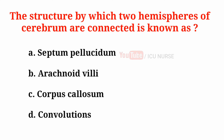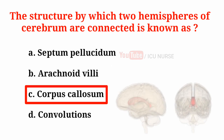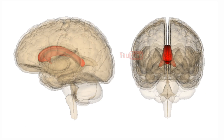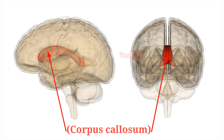The structure by which the two hemispheres of the cerebrum are connected is known as: A. Septum pellucidum, B. Arachnoid villi, C. Corpus callosum, D. Convolutions. The correct answer is C. Corpus callosum. The cerebrum consists of two hemispheres connected by the corpus callosum, which is a large bundle of nerve fibers.